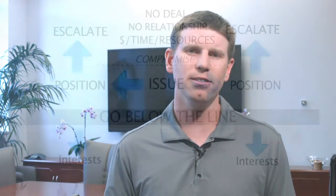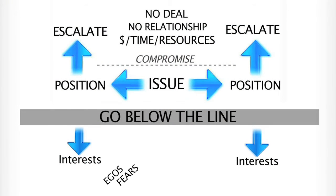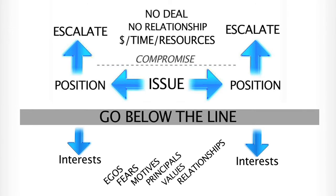But interests are very real to the people involved. Interests are things like egos, and fears, and motives, and principles, and values, and relationships, and circumstances. These are the things that have been proven to be the driving factors for people making decisions in the midst of a negotiation. It's not based on objective analysis that happens above the line — it's more interpersonal and psychological than that. These more abstract things exist below the line but are very real.